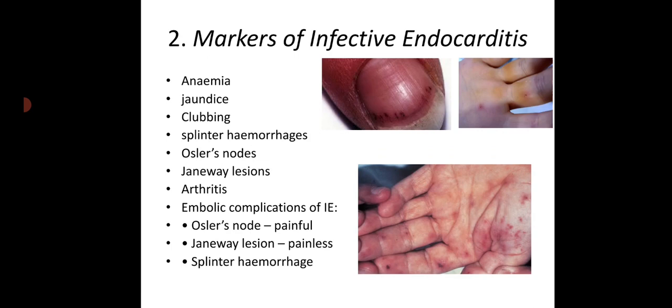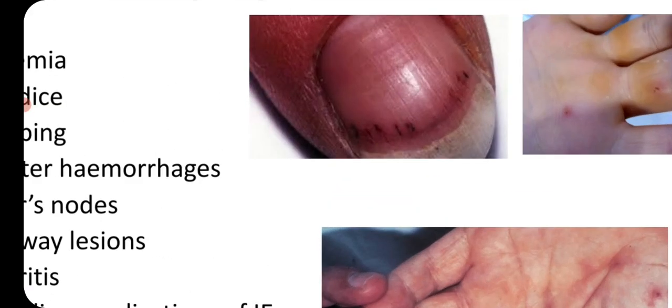Then, markers of infective endocarditis include anemia, jaundice, clubbing, and splinter hemorrhages.